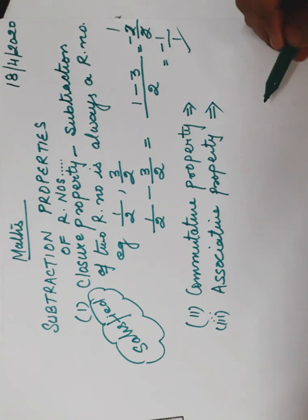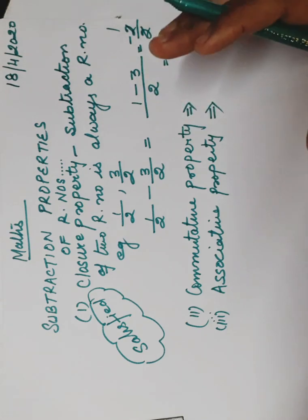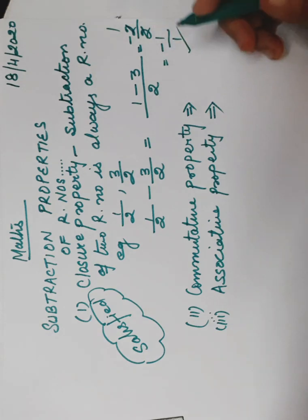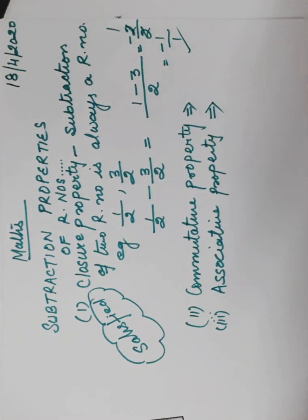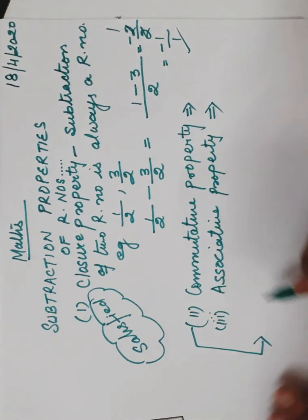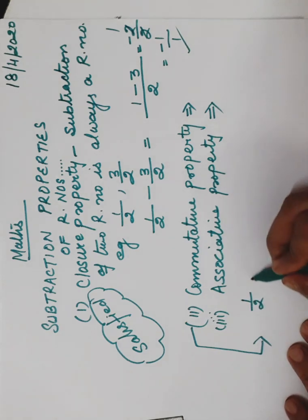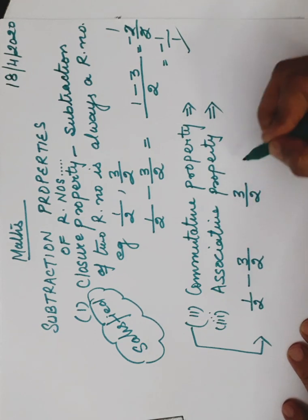What does commutative property say? Commutative property says that while adding or subtracting we can arrange the rational numbers in any order — means if we change the order and add or subtract, the answer should be the same. So what if we subtract 1 from 2? The answer is 1. And if we change the order and subtract 2 from 1, the answer is −1. Let's check with 1/2 and 3/2.